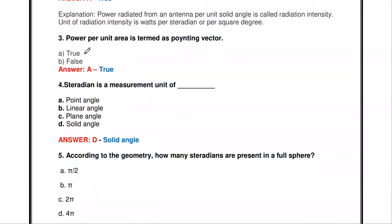The next question: power per unit area is termed as the Poynting vector.